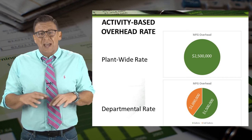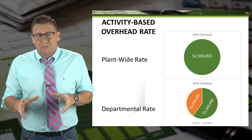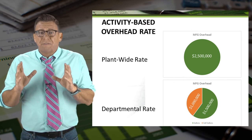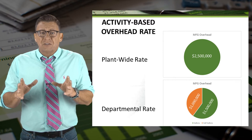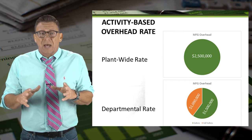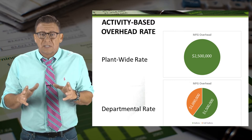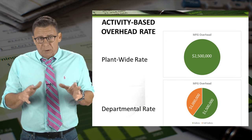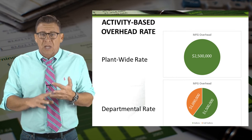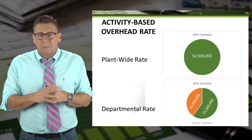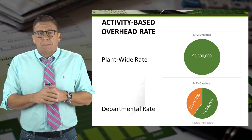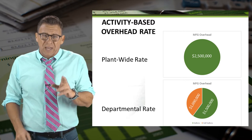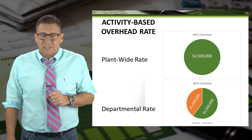So rather than have one pool of overhead to allocate with a plant-wide rate, we can refine this process by breaking out overhead by departments. Departments can be actual departments, product lines, or products, like I've shown here. But even departmental rates aren't as refined as activity-based rates.